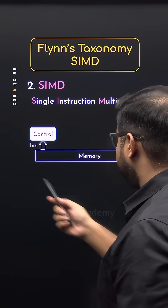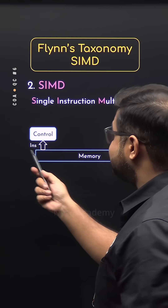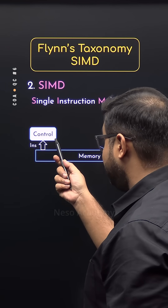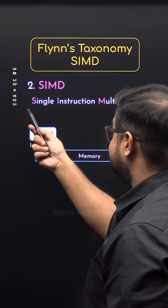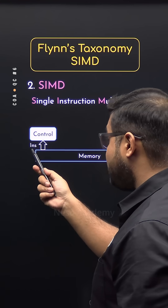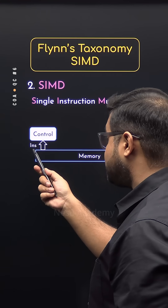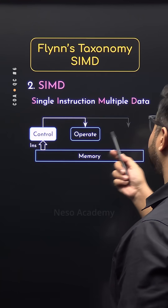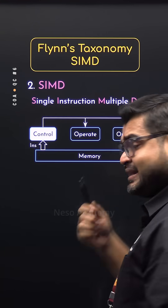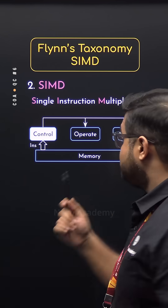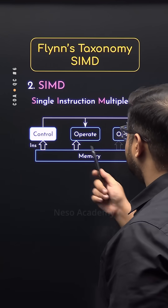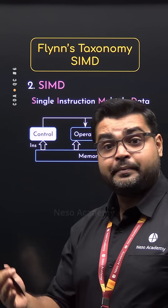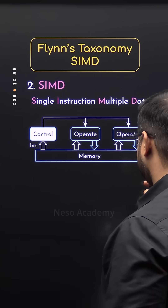It means from the memory, only a single instruction will be fetched by the control unit — that is, a single instruction stream — and based on that single instruction, the control unit will tell separate operate sections, that is, separate ALUs, to bring their own specified data from the memory, operate on them, and then produce the results.